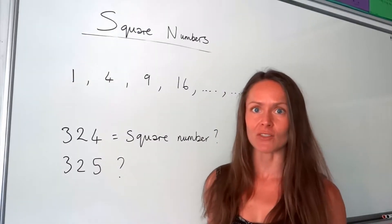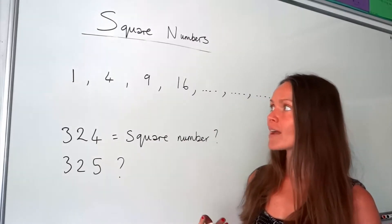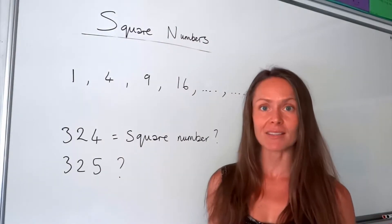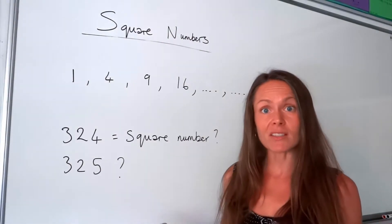Square numbers are just integers, so they're whole numbers, and we find them by squaring another integer. When you multiply a whole number by itself, the result is always a square number.